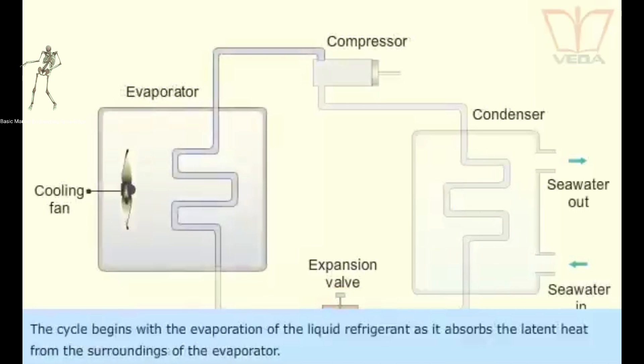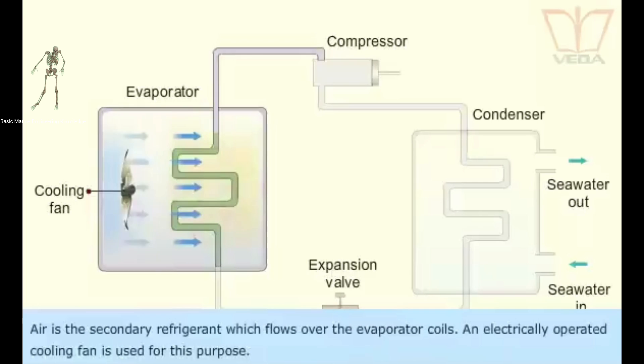The cycle begins with the evaporation of the liquid refrigerant as it absorbs the latent heat from the surroundings of the evaporator. Air is the secondary refrigerant which flows over the evaporator coils. An electrically operated cooling fan is used for this purpose.